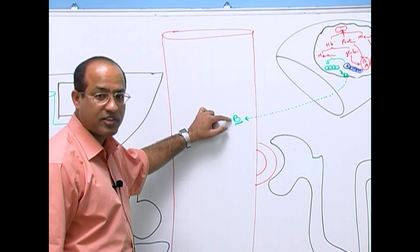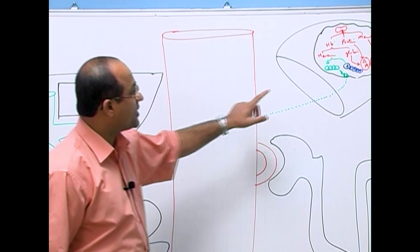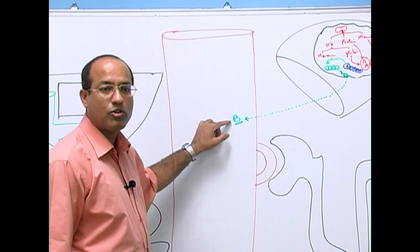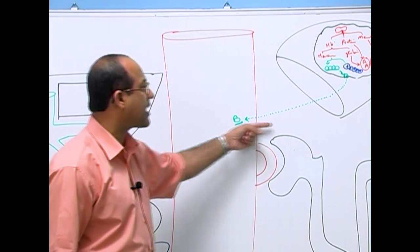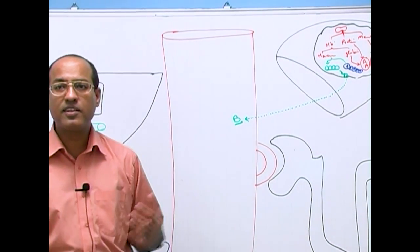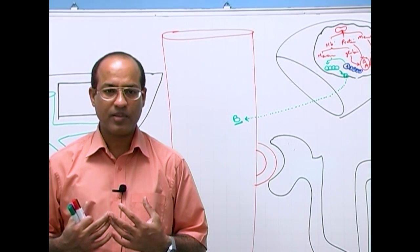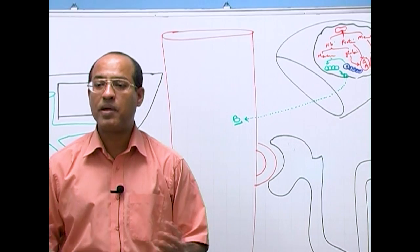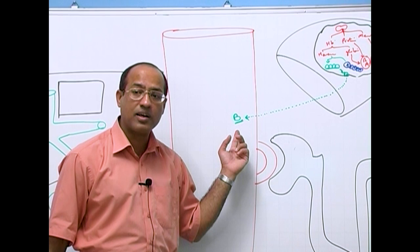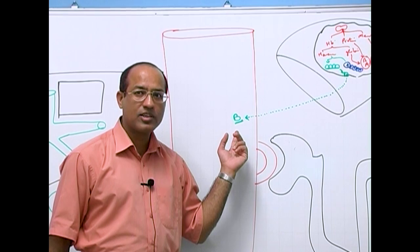Bilirubin is a highly toxic molecule we have to get it out of the body in a safe manner. Once bilirubin is released from the mononuclear cell into circulation, we should trap it in circulation so that it does not leak back into other tissues. If we can keep bilirubin trapped in circulation, sooner or later it will pass by the liver where the liver will handle it.